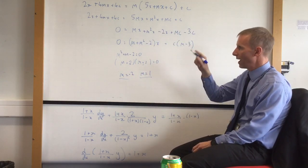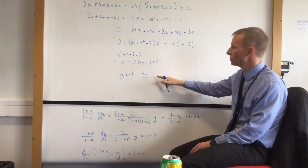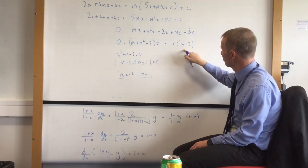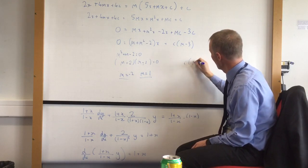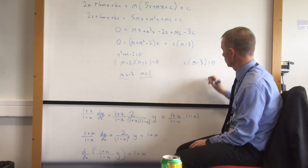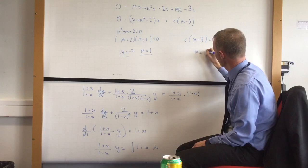Right, so I'm going to have either y equals minus 2x plus c or y equals x plus c. But I also need this thing here to be 0. Right, so c times m minus 3 has also got to be 0, which only works if m is 3.